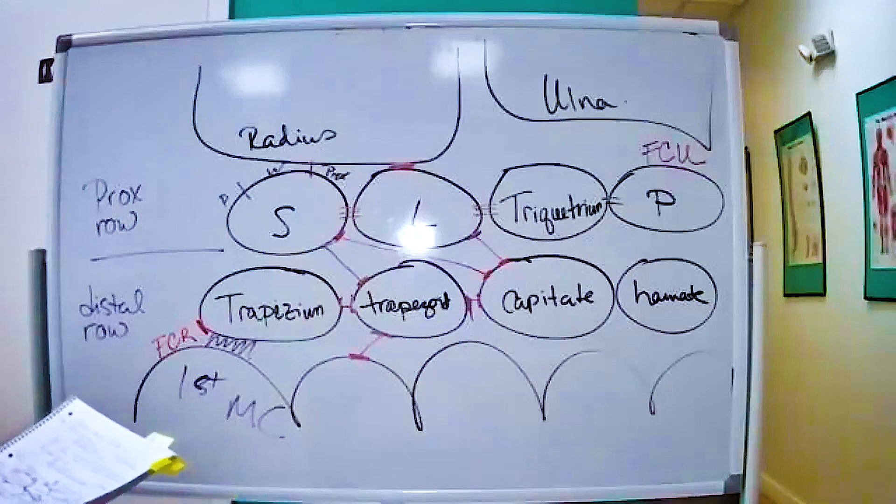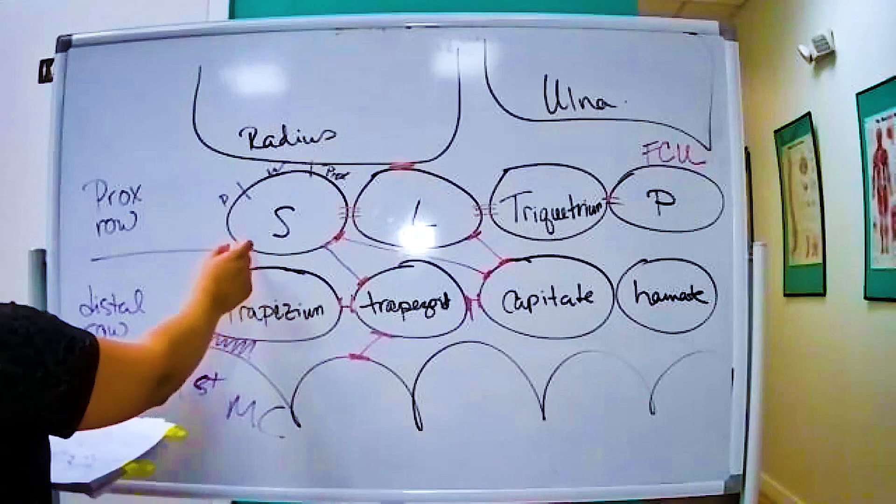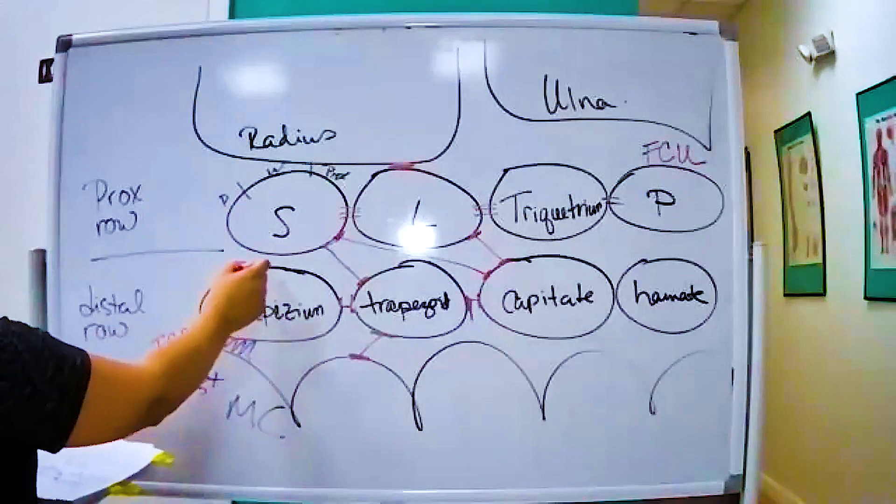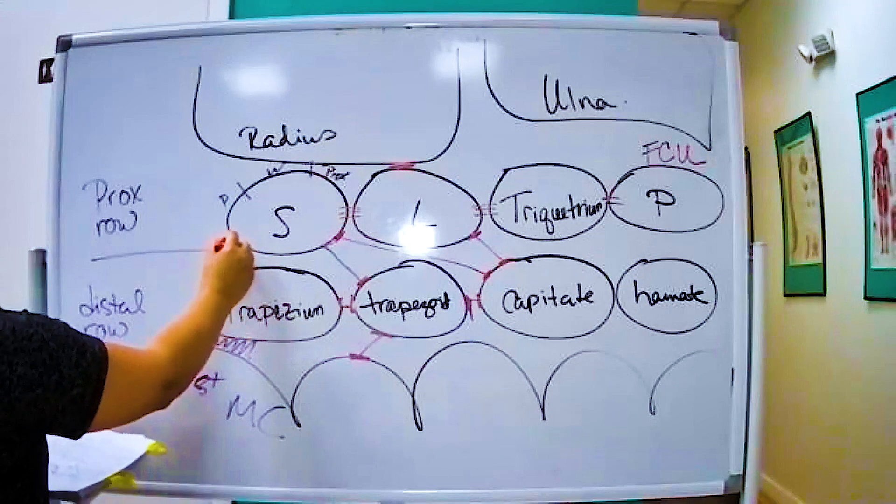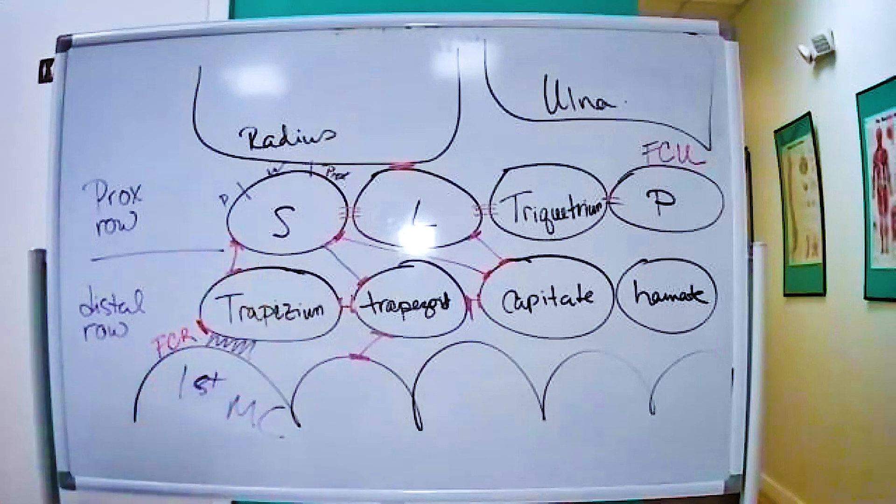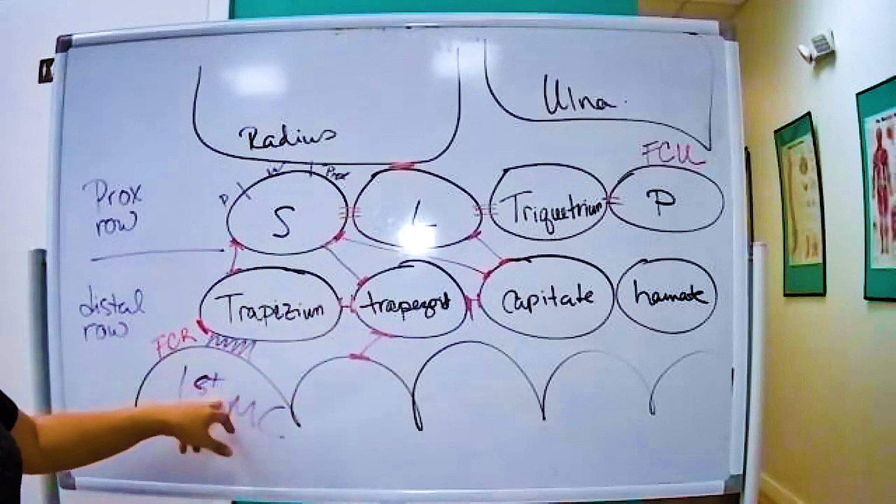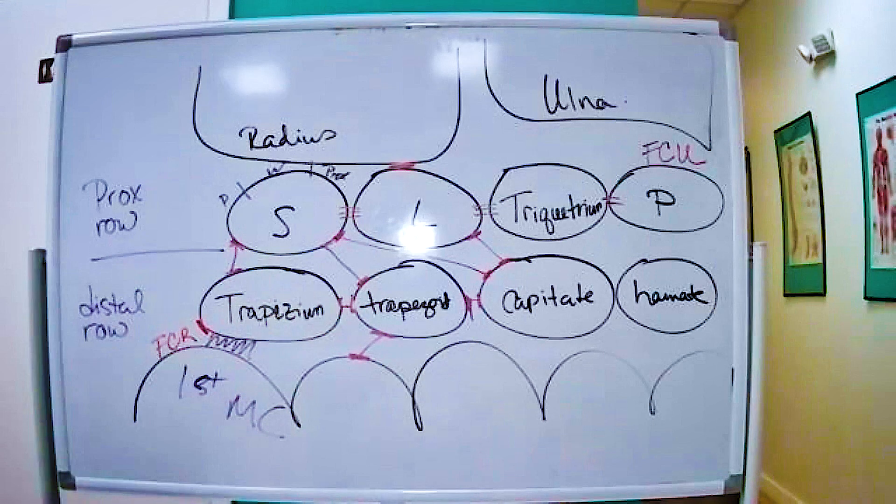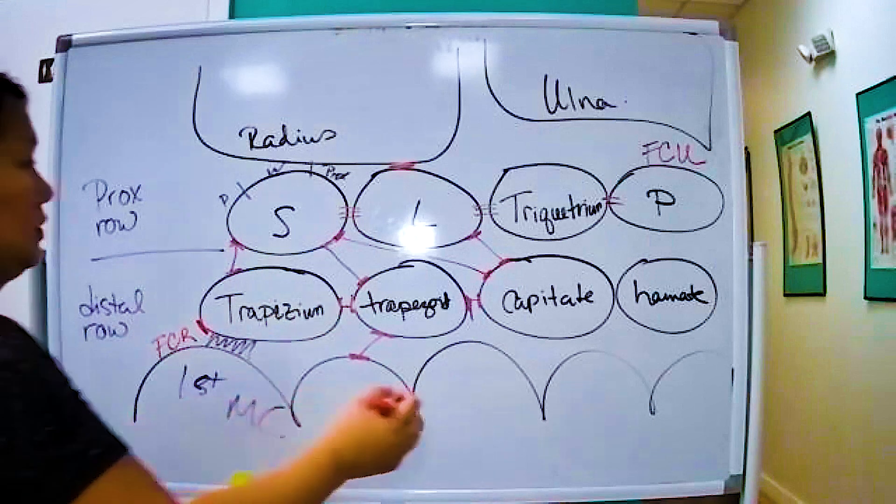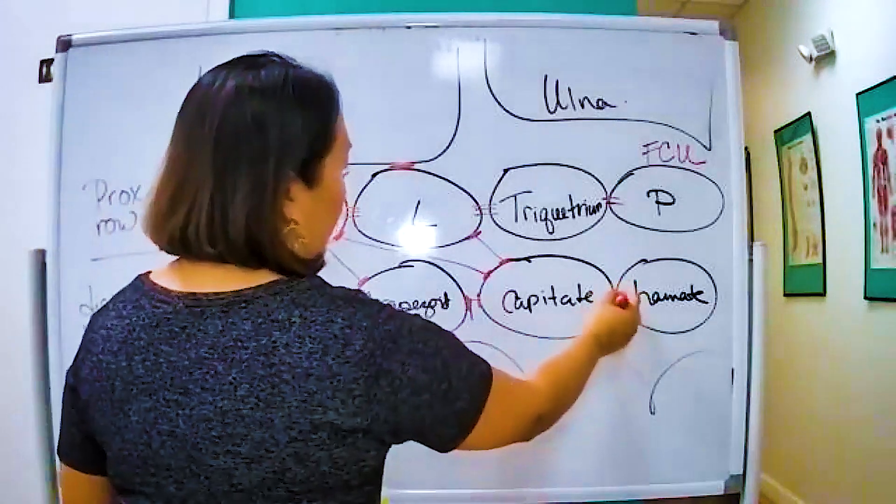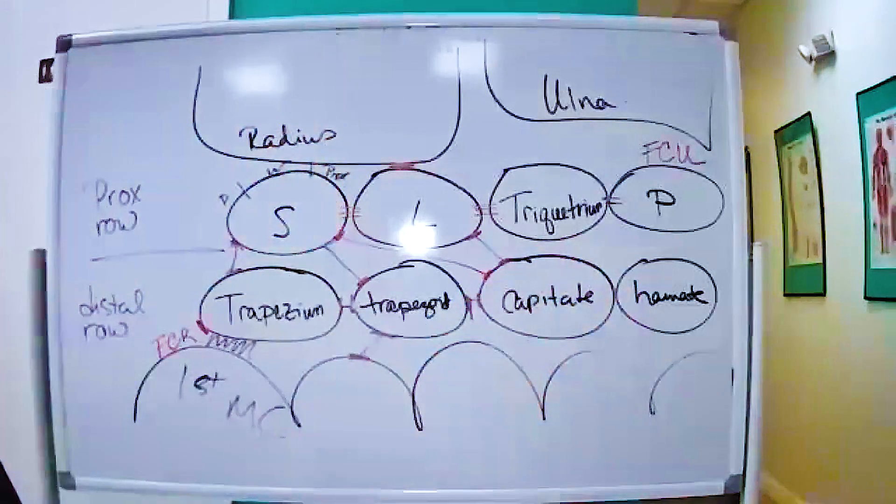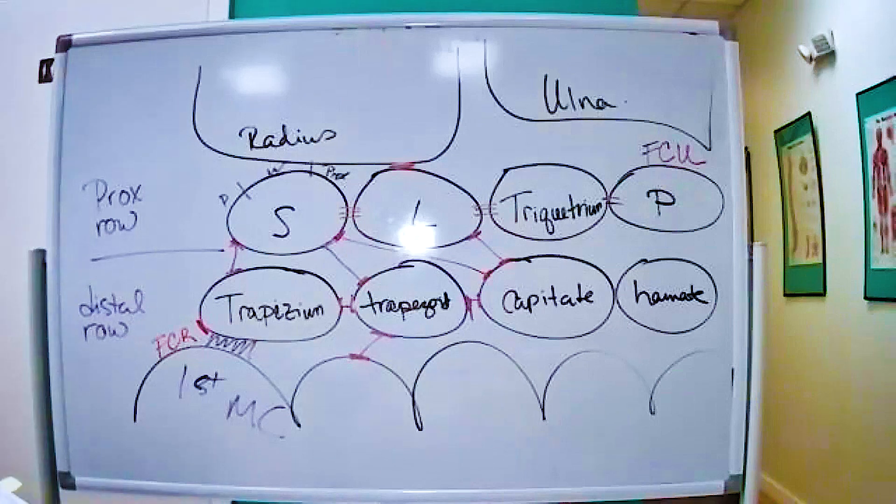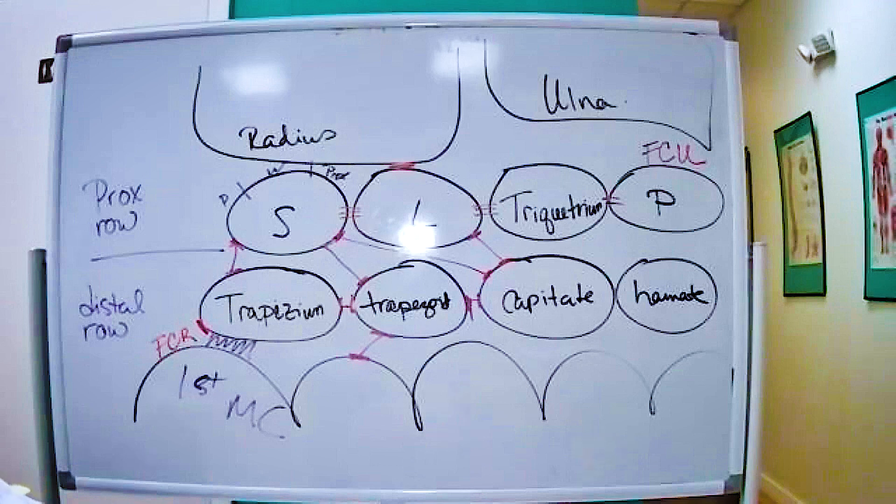The trapezium articulates with the distal pole, the distal pole of the scaphoid. So it is touching, obviously it articulates with the scaphoid, the first metacarpal, and holds the FCR. So that's all the articulations. Obviously, this one articulates, but if there's not a problem, so it doesn't really matter. If you're not a problem, I won't pay attention to you.